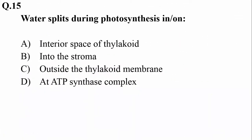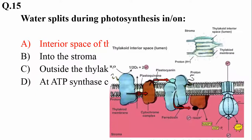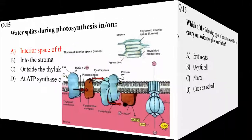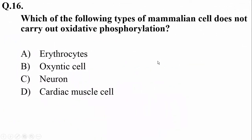What splits during photosynthesis on the interior space of the thylakoid? That is photolysis, associated with photosystem 2, taking place on the interior side of the thylakoid. Question number 16: which of the following types of mammalian cells does not carry out oxidative phosphorylation? They are erythrocytes, because they are without mitochondria, and they carry out substrate-level phosphorylation during glycolysis.